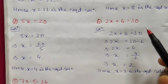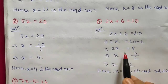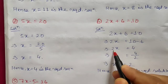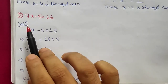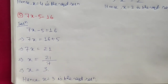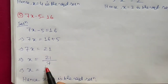Question 4: 2x plus 6 equals 10. Transposing plus 6 gives 2x equals 10 minus 6, so 2x equals 4. Dividing both sides by 2 gives x equals 2. Question 5: 7x minus 5 equals 16. Transposing minus 5 to the right side gives plus 5, so 7x equals 16 plus 5, which is 21. Dividing by 7 gives x equals 3.